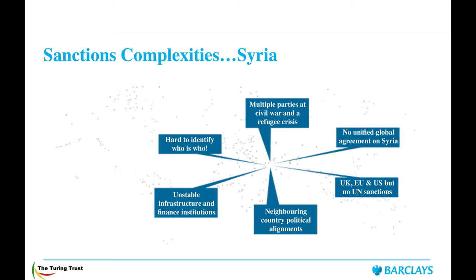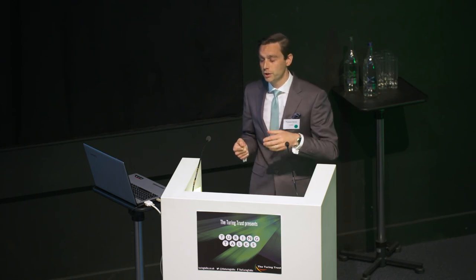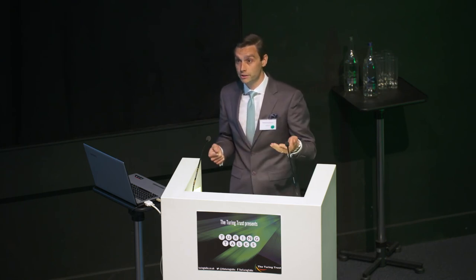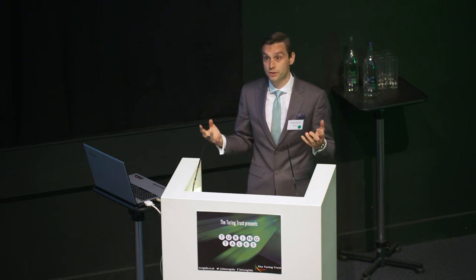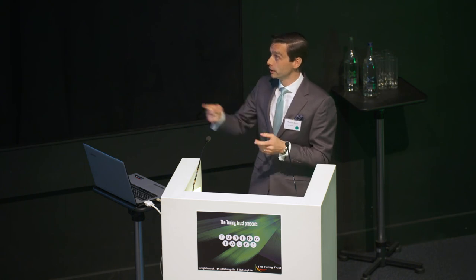Neighbouring country political alignments create further complications — corresponding with a bank that borders Syria is very difficult. Financial institutions in those countries are often themselves subject to sanctions. Even if you manage to get money into Syria electronically, how would you distribute it? Overland delivery carries serious physical security risks. It all comes back to the due diligence question: it is extremely hard to identify who is who.